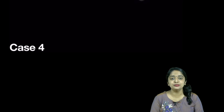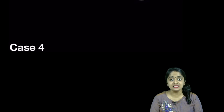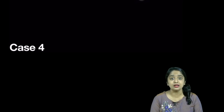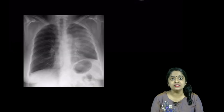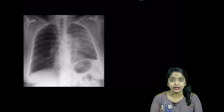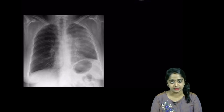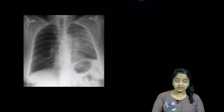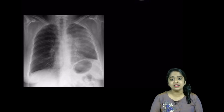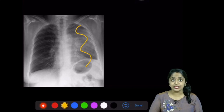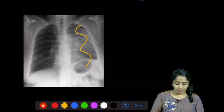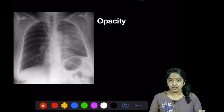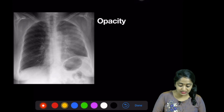Welcome back to module 5 of the collapse in chest imaging series. In this we shall discuss a particular case to identify the pattern of collapse. This is case number four — given to you is a radiograph. You can pause for a moment and try to find out all the positive findings. First and foremost, is the radiograph normal? The answer is no — this is abnormal. The abnormality is in the form of an opacity. The next question is: where is the opacity? You can see the opacity in the left hemithorax.